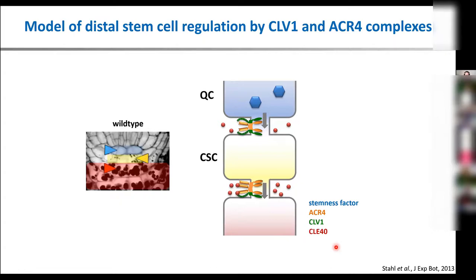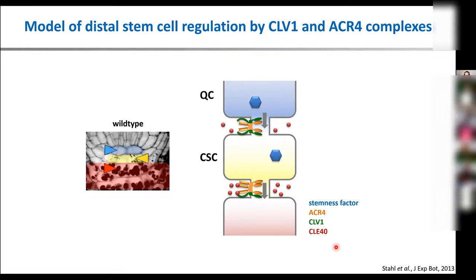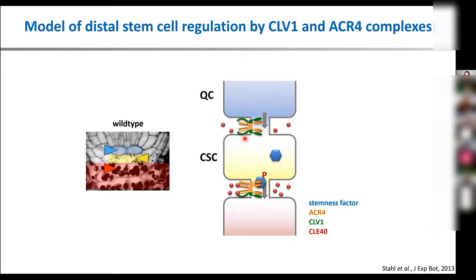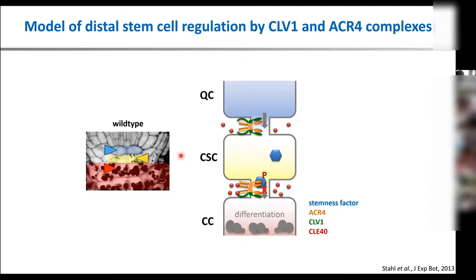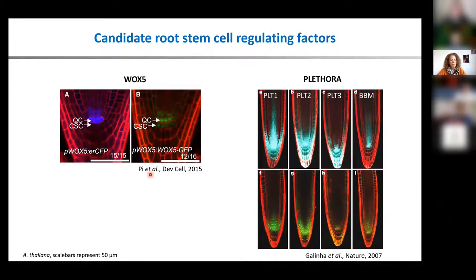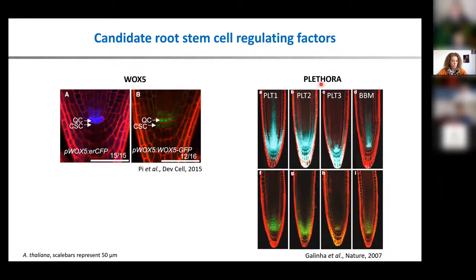This led us to propose a model. Plasmodesmata are like gap junctions in animal cells — they connect cells with each other. We think that a stemness factor moves through plasmodesmata along these different receptor complexes, gets modified, and at some point can no longer move, and differentiation takes place. We were asking what such a factor could be, and we had candidates: one is the Wuschel homolog VOX5, expressed in the quiescent center, where the protein fusion can also move. Another candidate is transcription factors of the Plethora group, expressed in the root meristem.